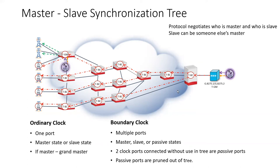So how do we determine what the tree looks like? When two devices share a link and are running the PTP protocol, they negotiate to determine who has the better clock. The grand master will have the best clock. These devices negotiate to determine which is master and which is slave, so one device gets its time from the grand master. That device is a slave to the grand master but can be master to one or more slaves. It runs the protocol with directly connected devices and determines it has the best clock — and even if their clocks are the same, being closer to the grand master gives it a better clock.